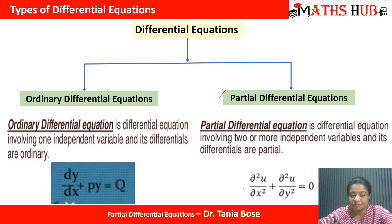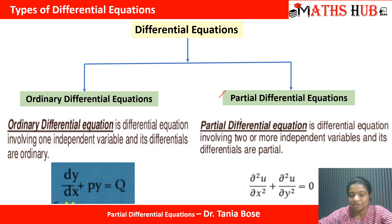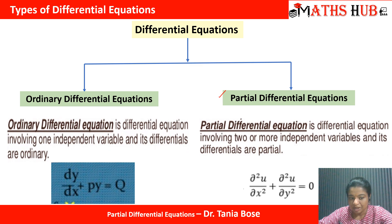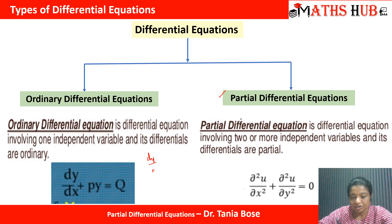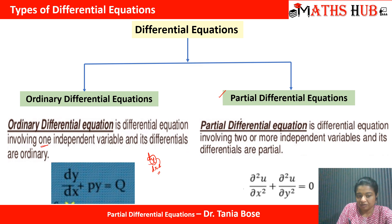What is the difference between ordinary and partial differential equations? In ordinary differential equations, the equation involves only one independent variable and the differential coefficient with respect to it. For example, dy/dx + Py = Q, where the differential coefficient is dy/dx, meaning y is the dependent variable depending on the independent variable x — so there is only one independent variable.